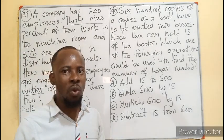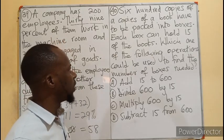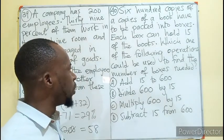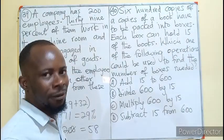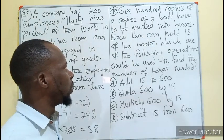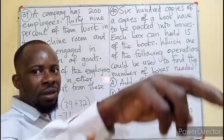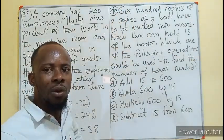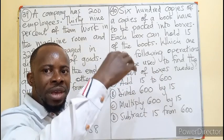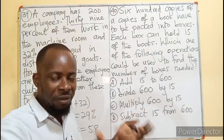Question 40: 600 copies of a book have to be packed into boxes. Each box can hold 15 of the books. Which operation could be used to find the number of boxes needed? You take a box, 15 go inside, another box gets 15, and so on — packing 15 at a time until all 600 copies are packed. So, are you adding 15s to get to 600, or are you dividing 600 among 15 per box?